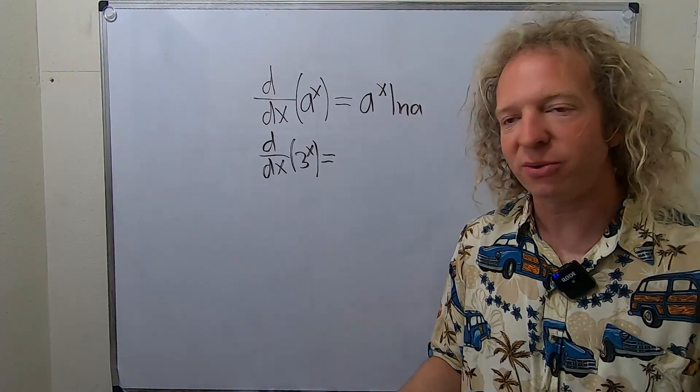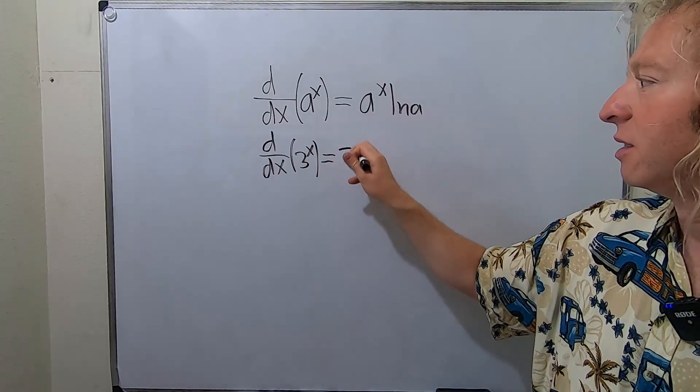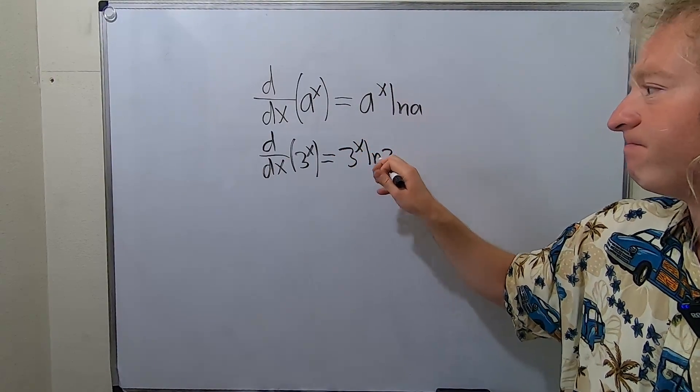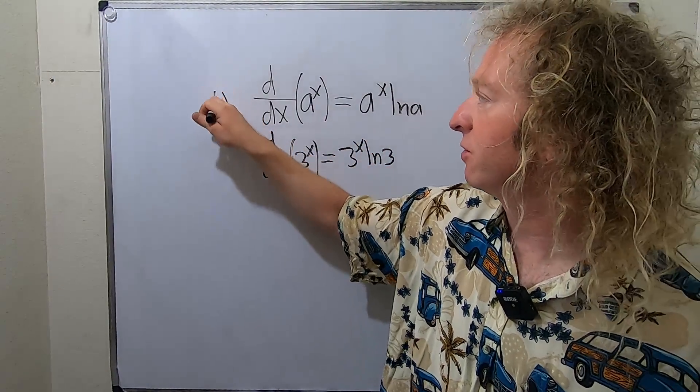So in this case, all you do is you write three to the x and then you put the natural log of three here. That's it. So this is the first formula.